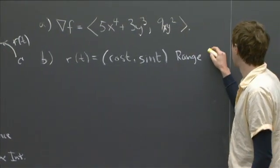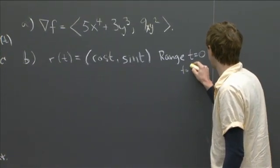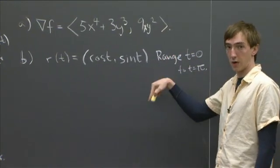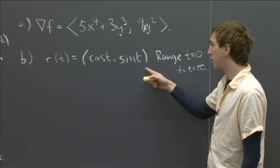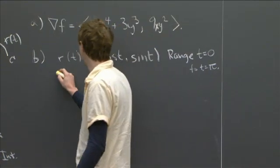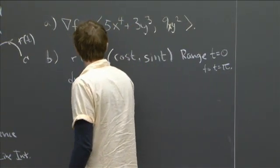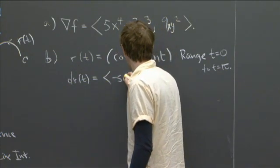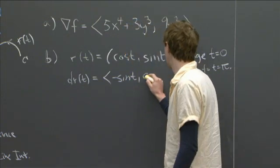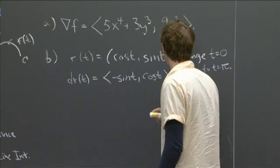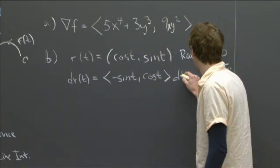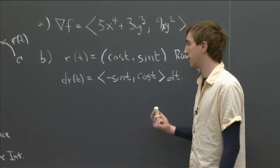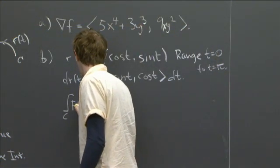And what's important is that the range is going to be from t equals 0 to t equals pi. It's t equals pi because we don't want to go all the way around the circle. We just want to go halfway around until we get to negative 1. So if that is r of t, then we can compute the differential dr of t. And so it's going to be just taking the derivative. So we have negative sine t and cos t dt.